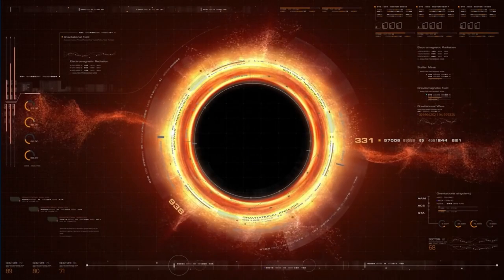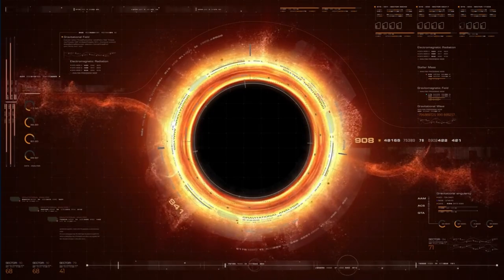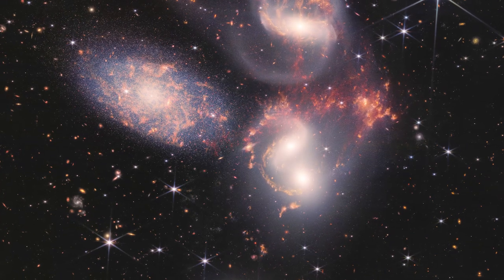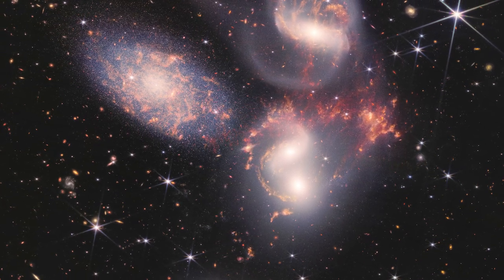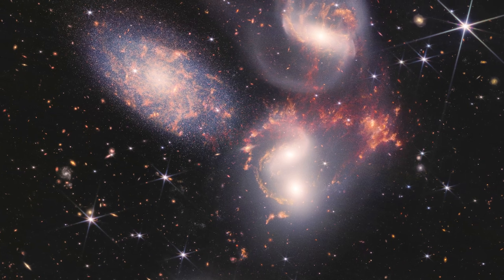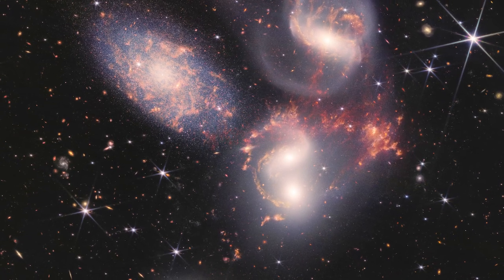We can comprehend supermassive black holes everywhere in the universe by studying them in surrounding galaxies. Stephan's Quintet consists of four galaxies that are tightly clustered together and one that only optically seems to be nearby. The group's distance from Earth is 290 million light-years.